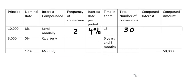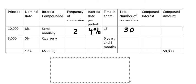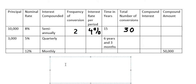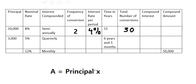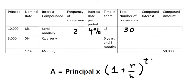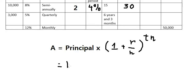Now let's find the compound amount. The formula is: principal multiplied by (1 plus R over N) to the power of T multiplied by N. The principal is 10,000.